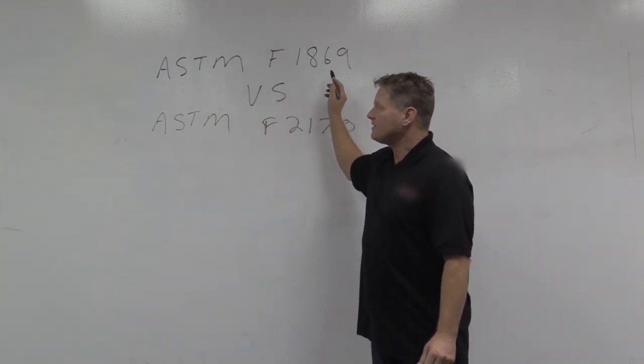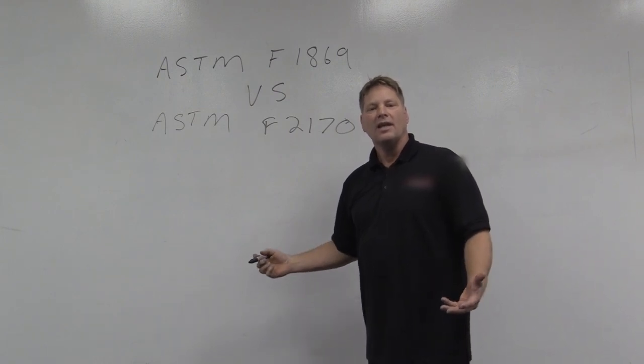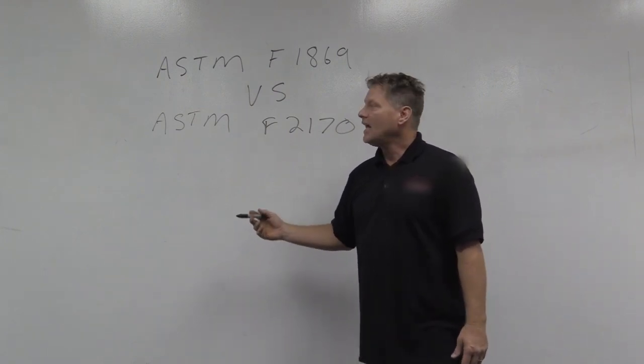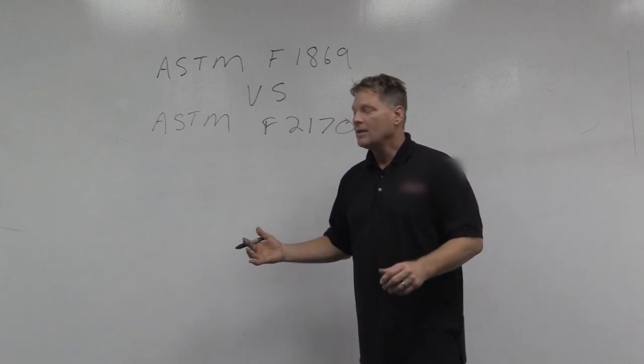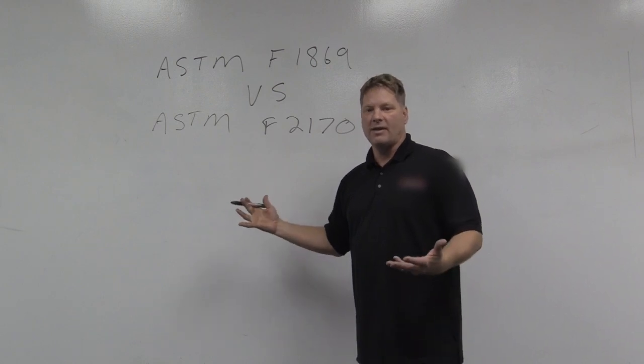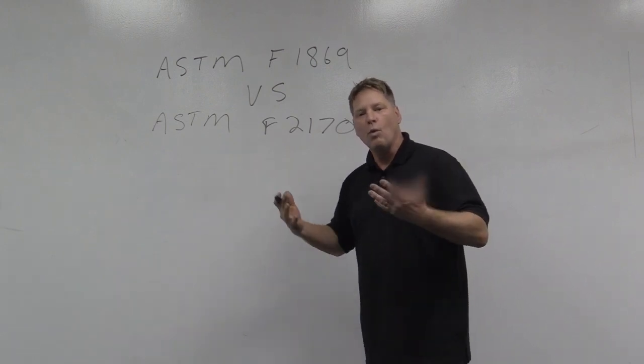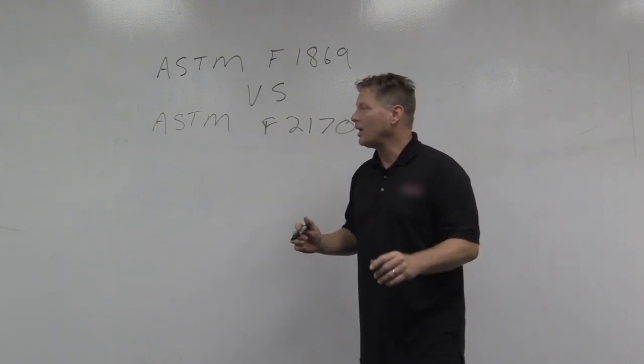ASTM F1869 was originally invented by the rubber floor companies in the early 1950s to find out how much moisture is coming out of the slab. It uses anhydrous calcium chloride to measure that as a weight gain of moisture brought in under a bubble, and we're going to examine that closely in a moment.